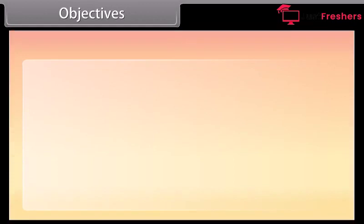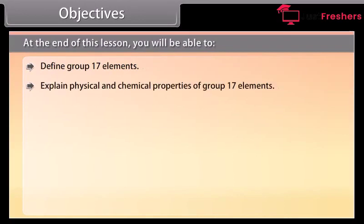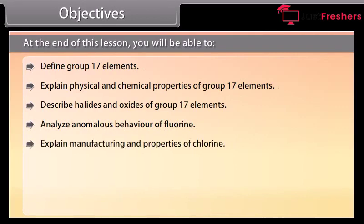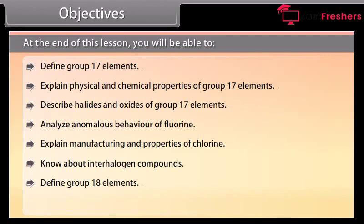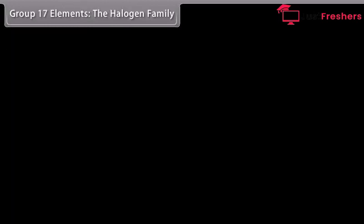Objectives: At the end of this lesson, you will be able to define group 17 elements, explain physical and chemical properties of group 17 elements, describe halides and oxides of group 17 elements, analyze anomalous behavior of fluorine, explain manufacturing and properties of chlorine, know about interhalogen compounds, define group 18 elements, and explain physical and chemical properties of group 18 elements.